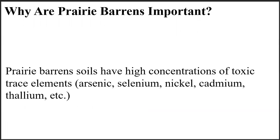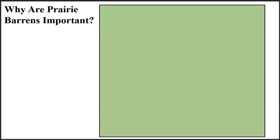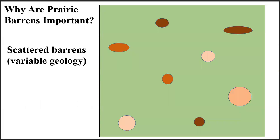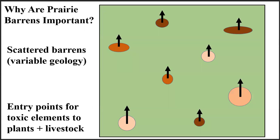So why do we care about prairie barrens? Prairie barren soils have concentrations of toxic elements that are several orders of magnitude greater than the surrounding prairies. Prairie barrens are scattered across western South Dakota, forming hot spots of toxic elements, which leach into the water supply and are also taken up by plants. These areas are used by humans for recreation and for grazing livestock, and exposure to toxic elements by drinking contaminated water or eating contaminated plants can cause adverse health effects.